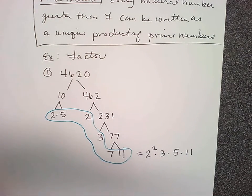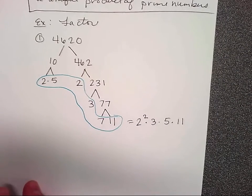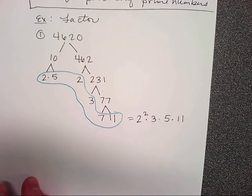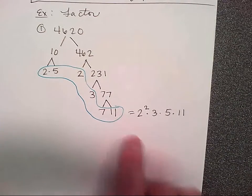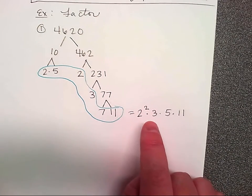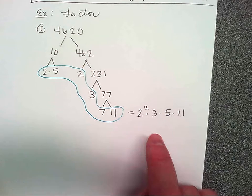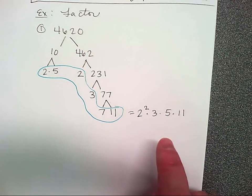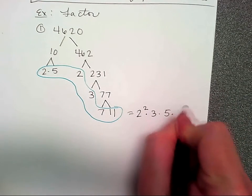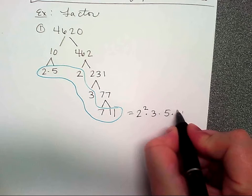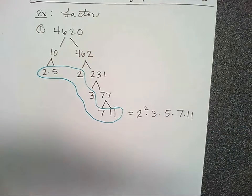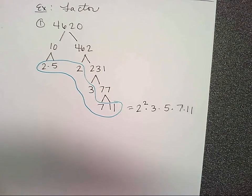So we've written it uniquely as a product of primes: two squared times three times five times eleven — that is two times two times three times five times eleven. The power shows how many times something multiplies by itself — two cubed is two times two times two.